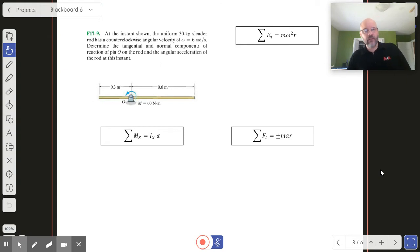Here we've got a rod problem with some coordinates. It's a slender rod, which is important for calculating the moment of inertia of the system. The rod has a certain mass and is already in motion. We need to find the tangential and normal components of reaction at pin O on the rod and the angular acceleration of the rod.